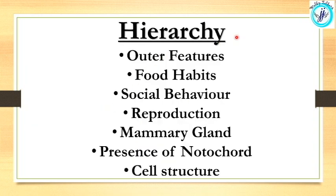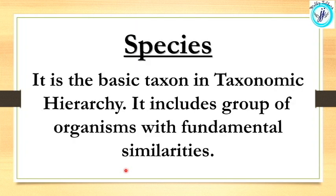We are going to discuss the basis for this hierarchy. One is the outer features of organisms. We categorize resemblances among organisms. Other bases include food habits, social behavior, reproduction, the mammary gland, the presence of notochord in the early stage of development, and cell structure. Cell structure is a very important factor for hierarchical division.